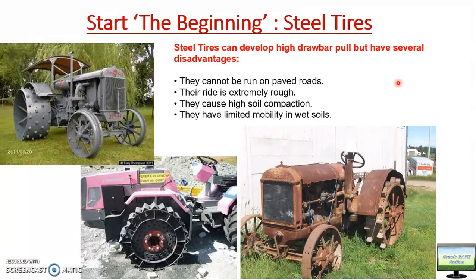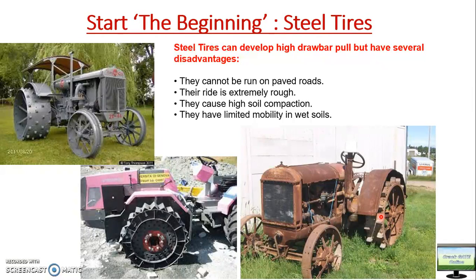But there were some inherent disadvantages of steel tires. They cannot be run on paved or concrete roads because of a very bumpy and rough ride, and the steel lugs would also damage the road surface. Running on soil caused high soil compaction, and in puddling conditions — like mud or fields filled with water — the tires would penetrate very deep into the mud and get stuck, limiting mobility in wet soil. Their heavy weight also led to higher fuel consumption.